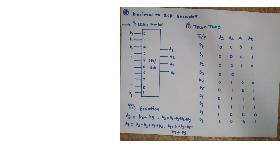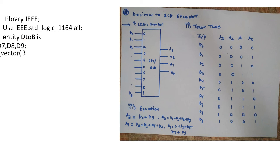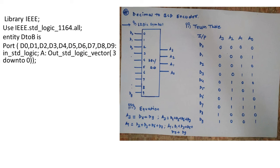Let us start with the first term as usual as defining the library element as IEEE. We will use it and its standard package with all component. Then we will declare the entity whose name is d2b that stands for decimal to BCD encoder. In case of port we have 10 digits starting from d0 to d9 which are input standard logic and an output standard logic vector as a whose length is 3 down to 0. That will cover a3 to a0.